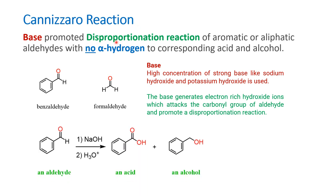In a disproportionation reaction, the substrate gets oxidized and reduced simultaneously. For example, benzaldehyde is oxidized to benzoic acid and reduced to benzyl alcohol. The key points in a Cannizzaro reaction are: the starting material has no alpha hydrogen, the products are the oxidized and reduced forms of the starting material, and a concentrated strong base is used.